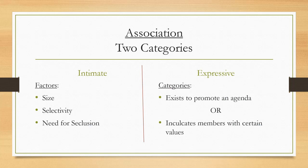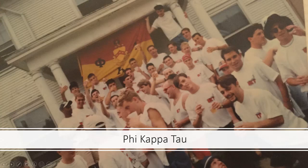Intimate association. Why would the courts say that an intimate association cannot be forced to associate with people with whom they don't want to associate? The best example of an intimate association would be something like a college fraternity chapter or sorority chapter. Courts usually look at them at the chapter level.